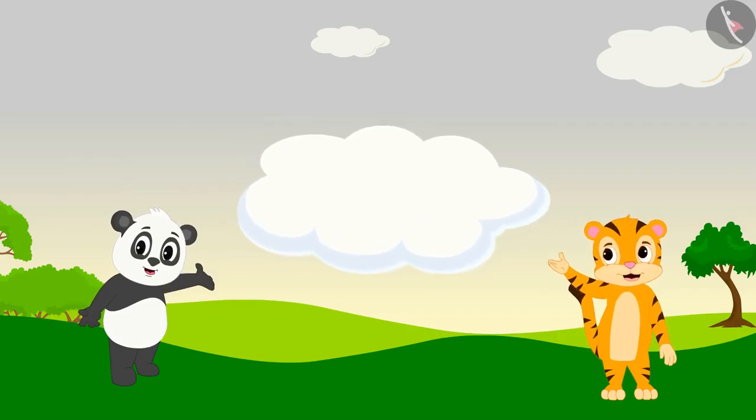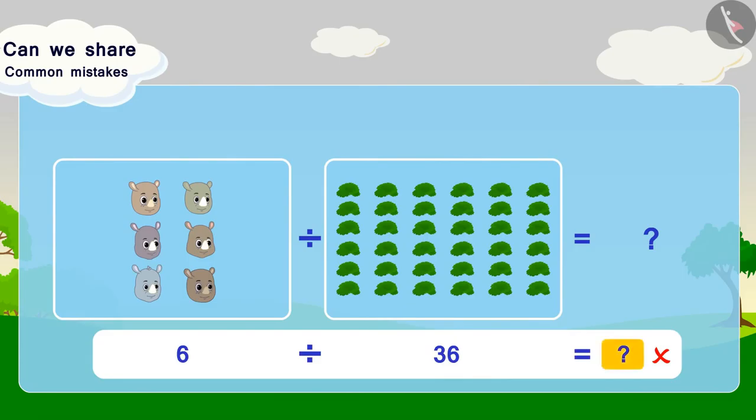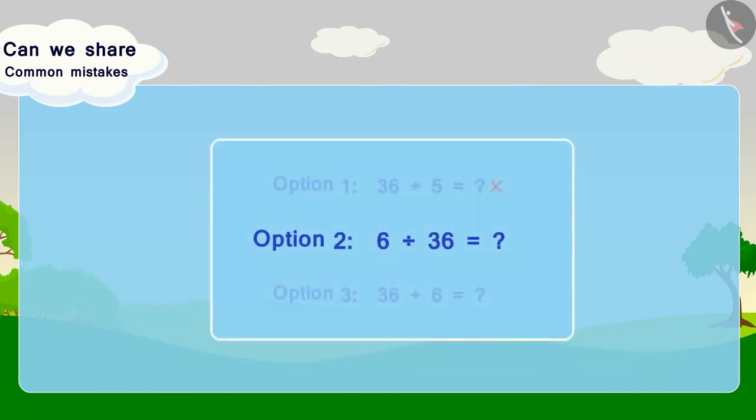Now, let us look at option 2. In this option, 6 friends are being divided into 36 grass clusters, which is wrong according to this question. For this reason, this option is incorrect. This is a very common mistake that we make while performing division.